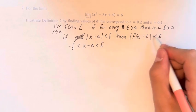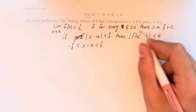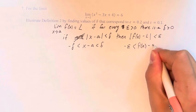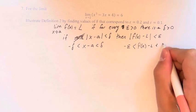And if we say that f of x minus L is less than epsilon in the absolute value, that means that it's greater than negative epsilon and it's less than epsilon.